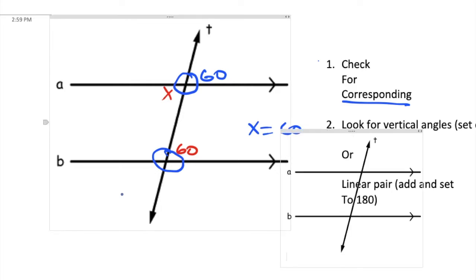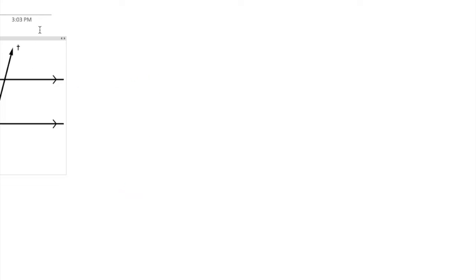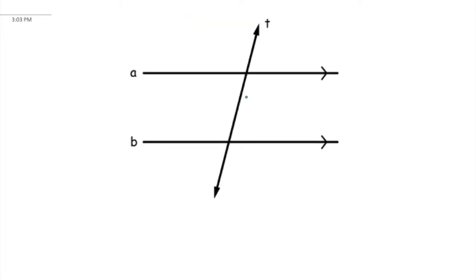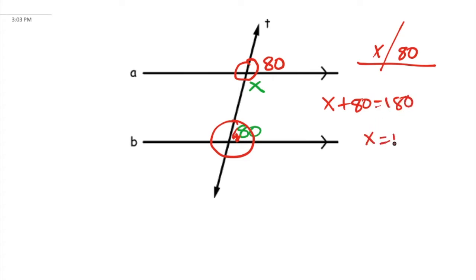Let's try another one. This is the one a lot of students get wrong. Here's an x and here's an 80. We're going to use the one we know. We're going to look at that 80 and notice it's the top right. So up here, the top right will be 80 because it's corresponding. Now we should notice that x and 80 are a linear pair. So x plus 80 makes 180. x will equal 100.